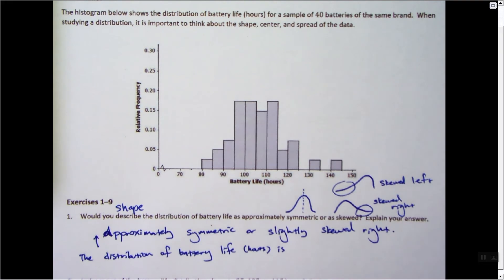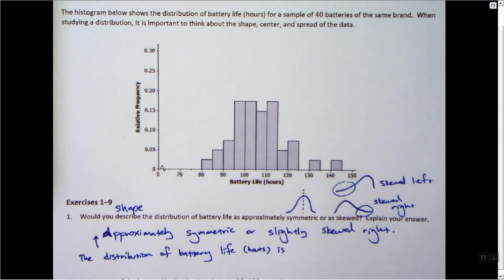approximately symmetric or slightly skewed right. I could see either one saying, yeah, it's approximately symmetric. Yep, I see that. Is it slightly skewed right? Yep, I see that. If you said skewed left, I would say I disagree. Anyway, so either one of those I have to say are good answers in describing the shape of this distribution.